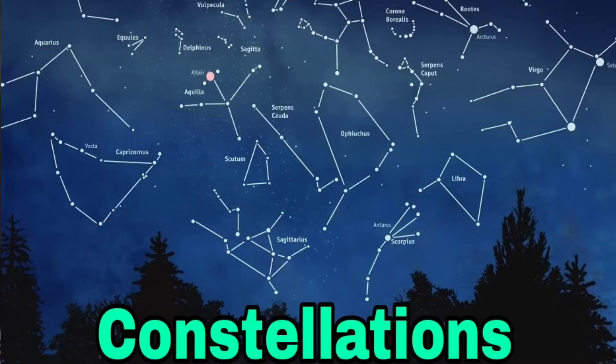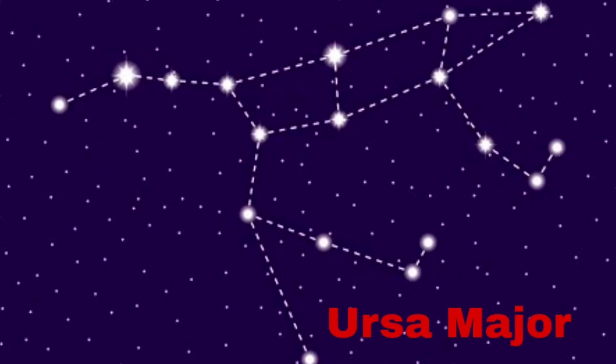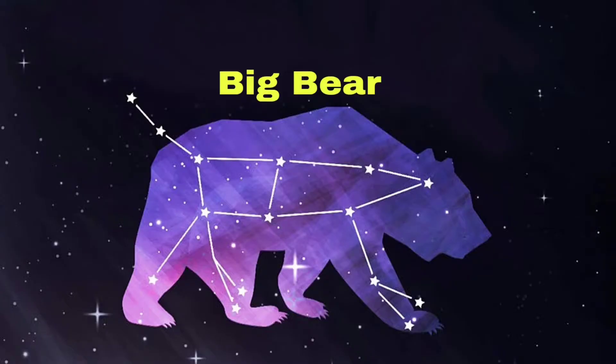While watching the night sky, you can see some patterns formed by groups of stars. These are called constellations. One very important constellation is Ursa Major. The shape of Ursa Major is like a bear, so it is also called the big bear.